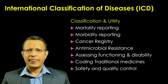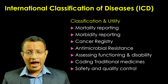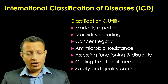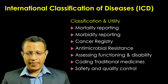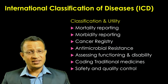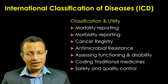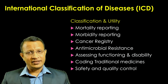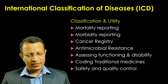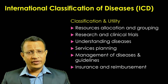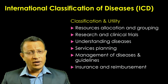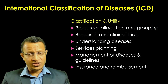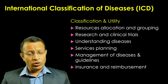What is the utility of ICD-11? Basically, as I mentioned, for mortality reporting and morbidity reporting — to know if any intervention is done, whether the mortality or morbidity decreased within the region, across the region and across time. Further, cancer registry, antimicrobial resistance coding has been done, assessing functionality and disability, which is a main aim of WHO looking into the WHODAS — that is the World Health Organization Disability Assessment Scale.